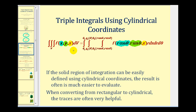Just as with polar coordinates, the volume differential dV gives us an extra factor of r, so we have r dz dr dθ. If the solid region of integration can be easily defined using cylindrical coordinates, the result is often much easier to evaluate. When converting from rectangular to cylindrical coordinates, the xy, xz, and yz traces are often helpful.